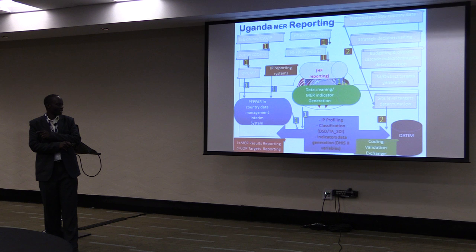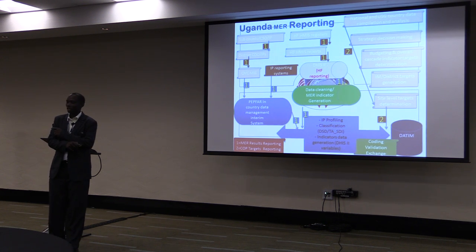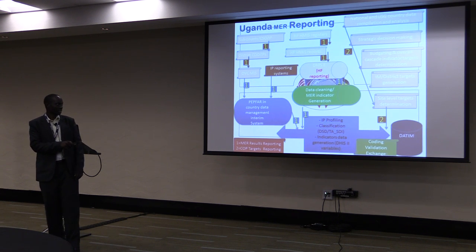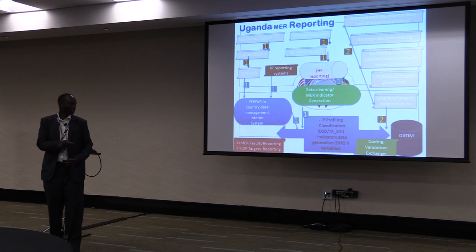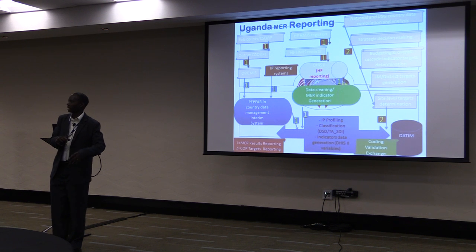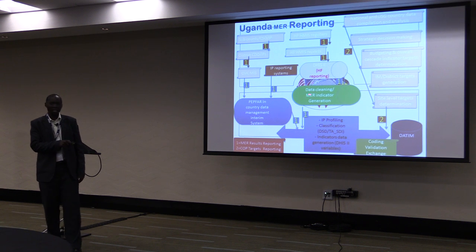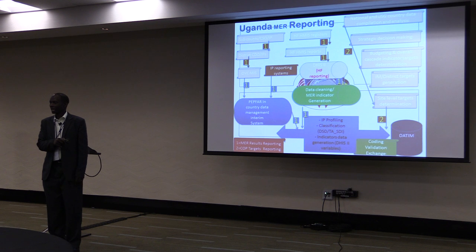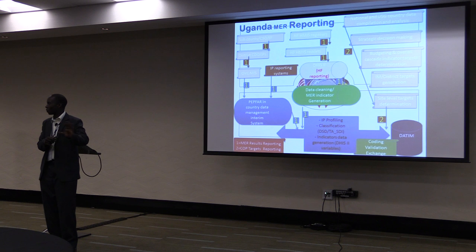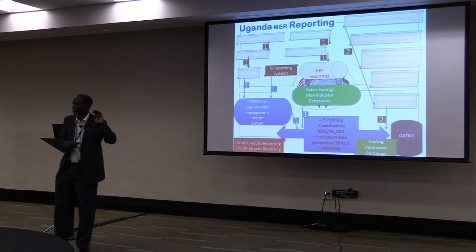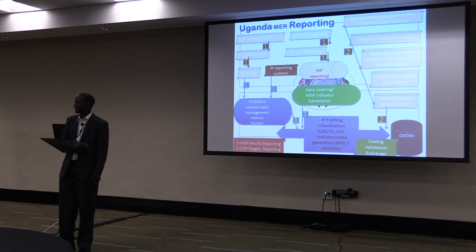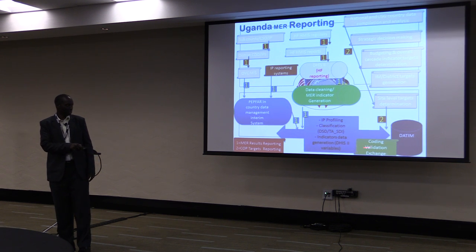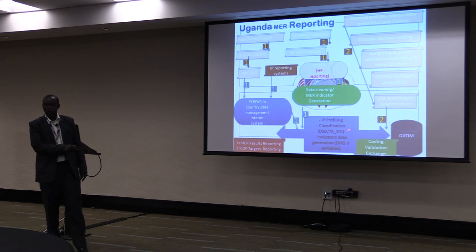We also have a site list which has the DSD and TA classification by site. We use that site list to determine whether the results will be DSD or TA for that partner. Once we have those final files, we have a USG review, and then additional reviews with implementing partners. We do the approval outside DATIM — the inside DATIM approval is the formality. We have all our agreements before we go into DATIM, so we don't have data being pushed back. We agree outside DATIM, then do the coding, data validation, and provide the exchange file.